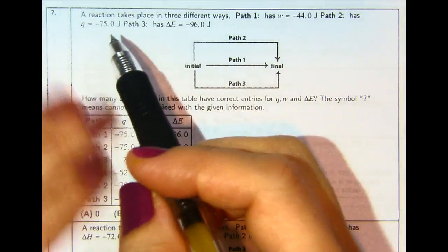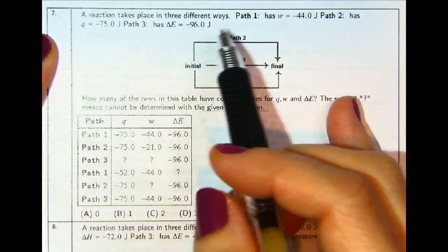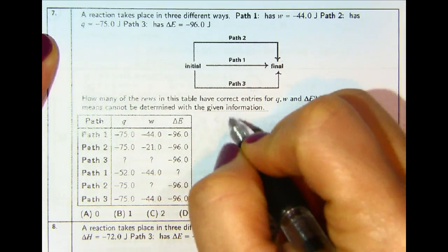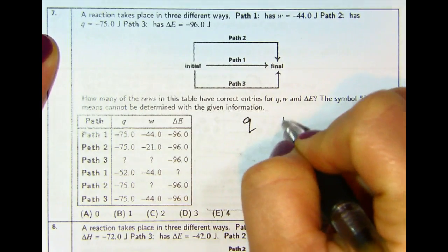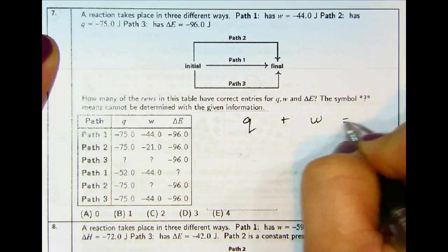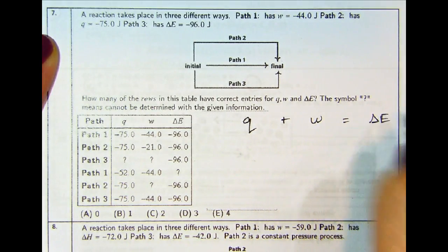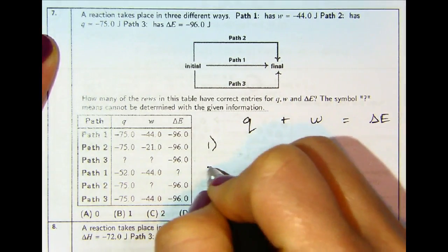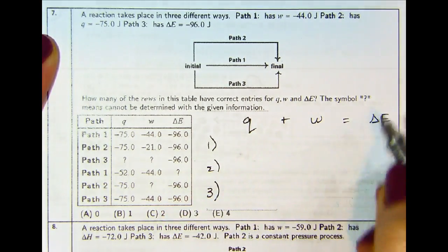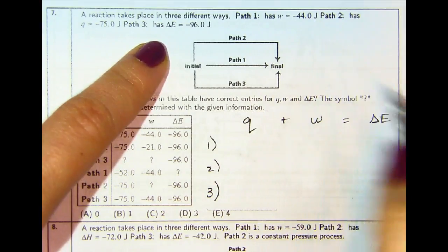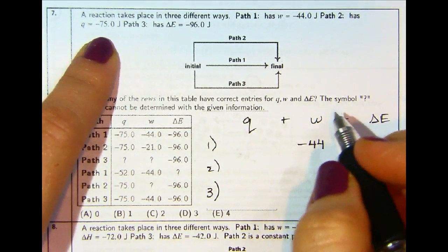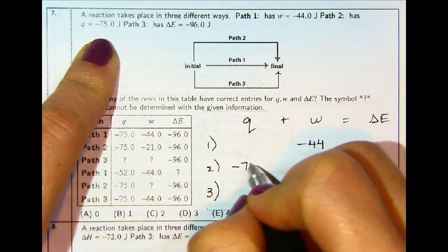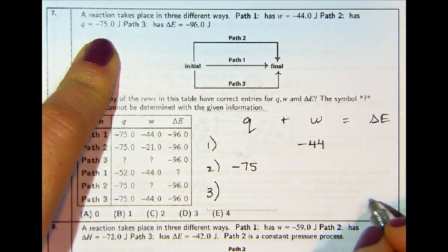Number 7. A reaction takes place in three different ways. Let's set up a table with Q, W, and delta E for path one, path two, and path three. Path one has W of negative 44. Path two has Q of negative 75. And path three has delta E of negative 96.